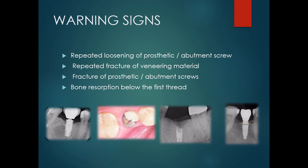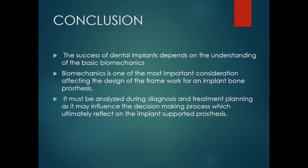Fracture of the prosthetic or abutment screws and bone resorption below the first thread are also warning signs. Generally, bone loss up to the first thread is considered physiological remodeling, whereas bone resorption below the first thread is a warning sign. In conclusion, the success of dental implants depends on proper understanding of basic biomechanics. Biomechanical considerations for implants follow simple mechanical rules based on leverage principles, and by considering the patient's functional behavior, limiting the extension of prostheses, and controlling the occlusal pattern and contacts, possible overload situations can be minimized, improving the prognosis.